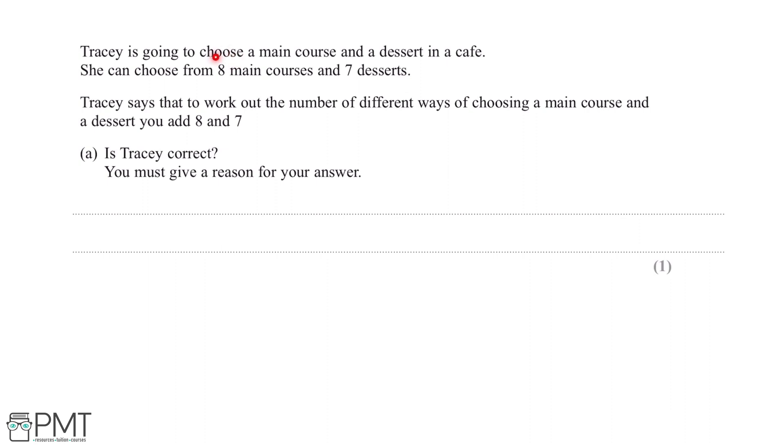And again, if we take the second main course from the menu, we'll still have seven ways of choosing the dessert and so on. So is Tracy correct? No, Tracy is not correct because she should multiply eight and seven rather than add them.